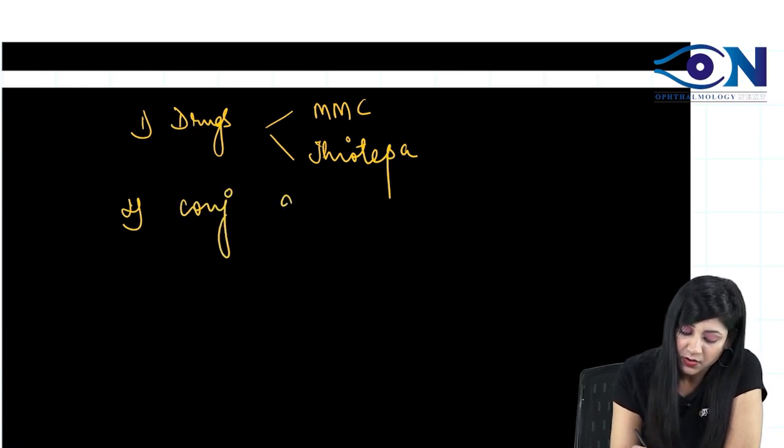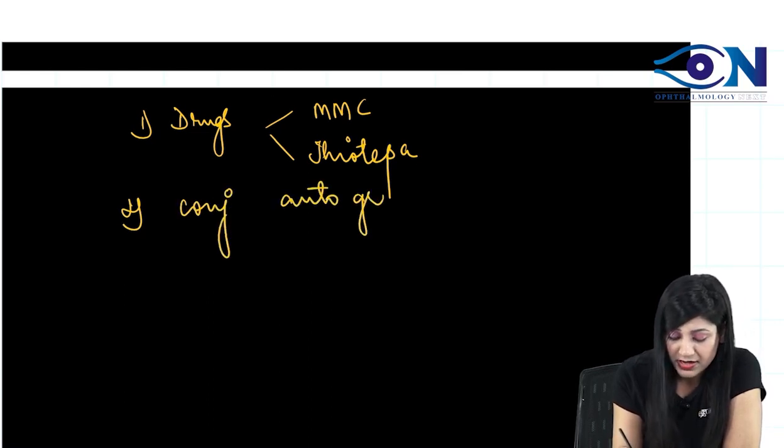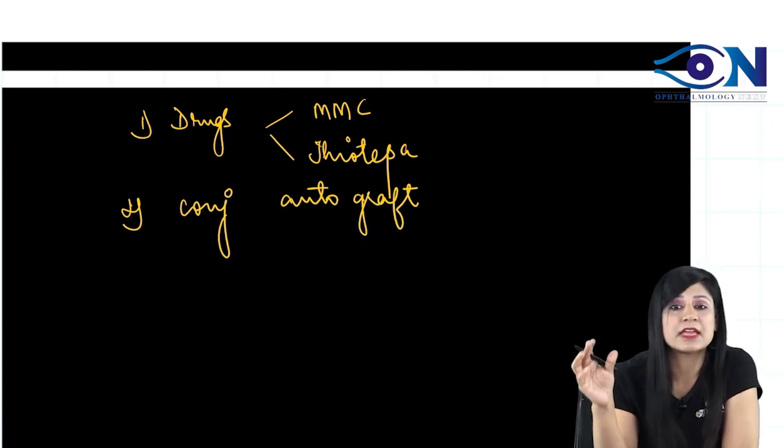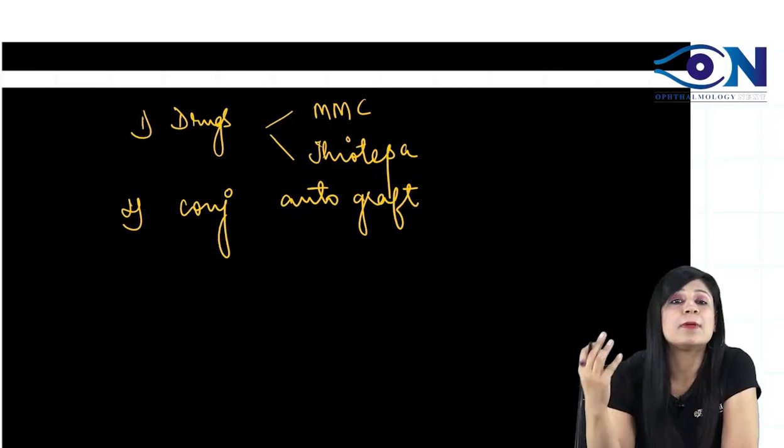We can do the conjunctival autografting. Take the graft from the same person from the conjunctiva and cover it. Basically, you do not have to leave the bare tissue.